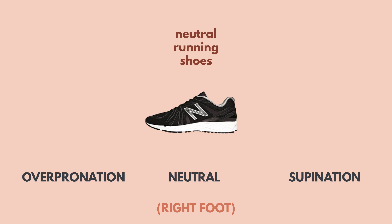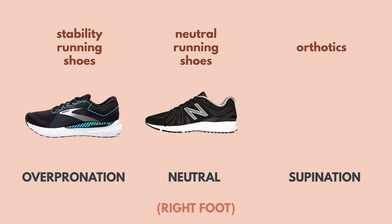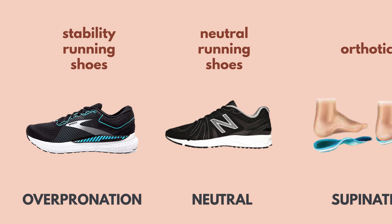Some runners who supinate more excessively may also need orthotics, which are unique soles constructed by foot specialists. The main difference between neutral and stability shoes comes in the form of a medial support panel found in stability shoes. This means that the shoe is built up more in the medial aspect in order to prevent the ankle from rolling inwards — i.e. overpronation.